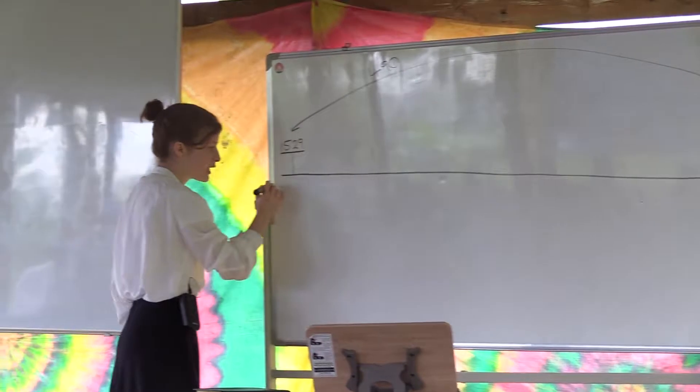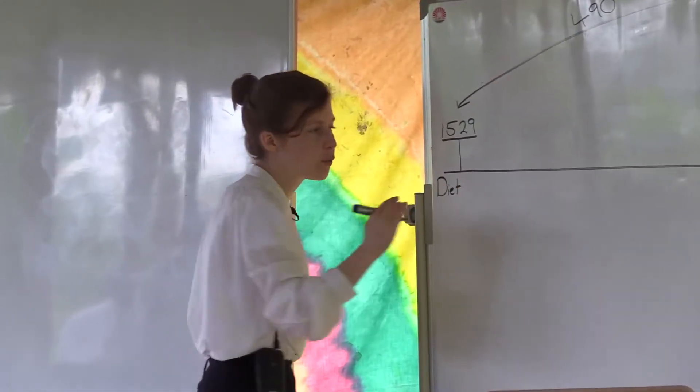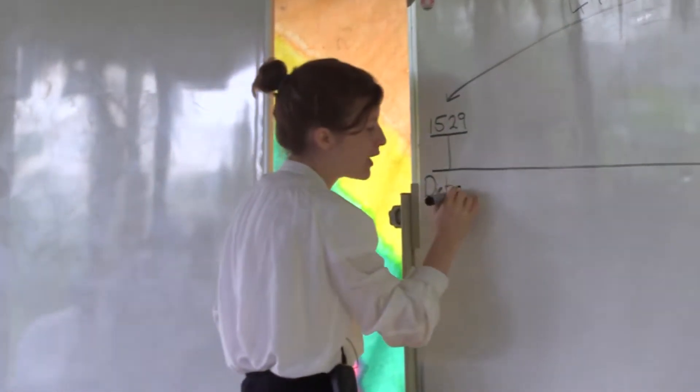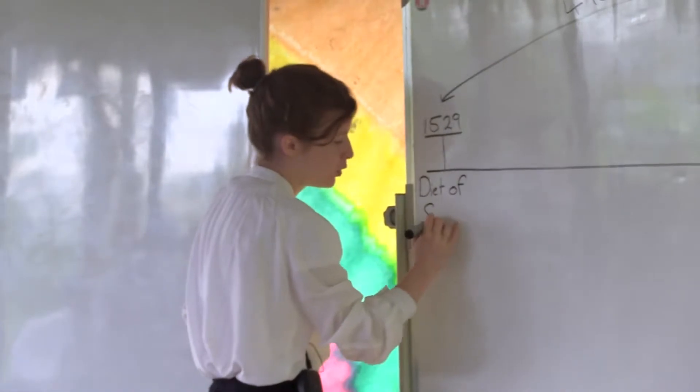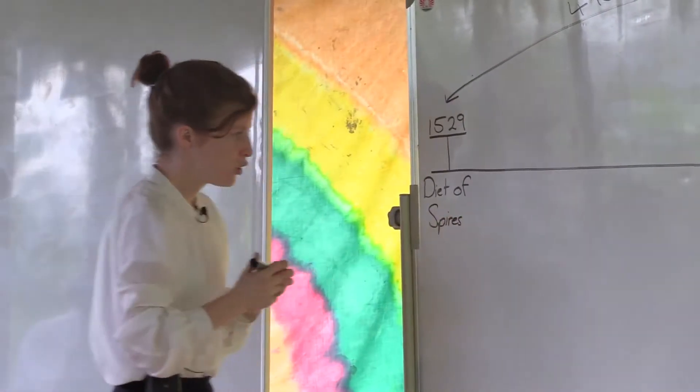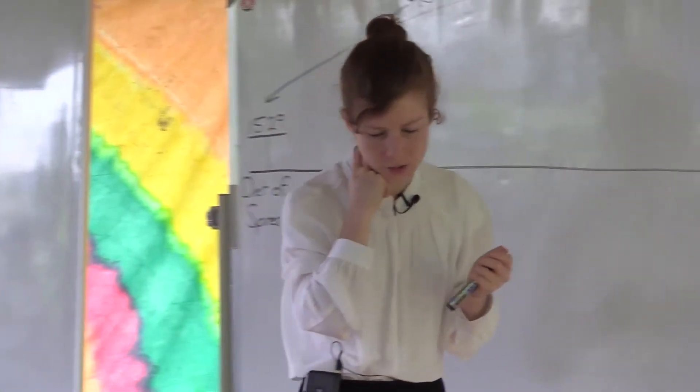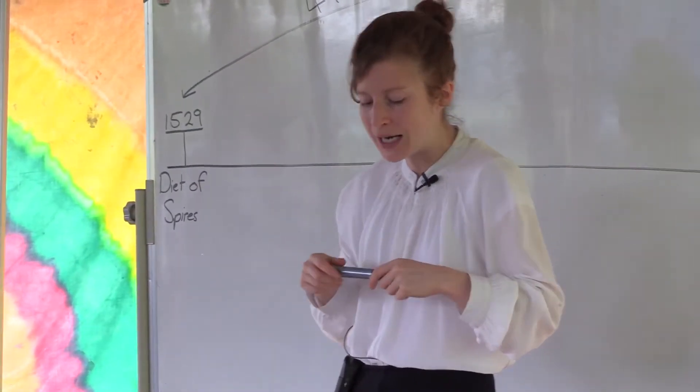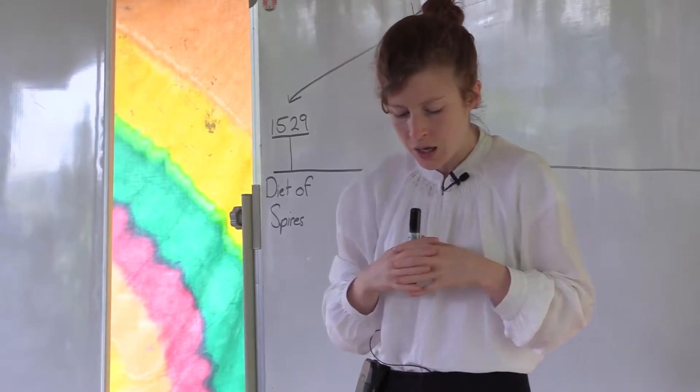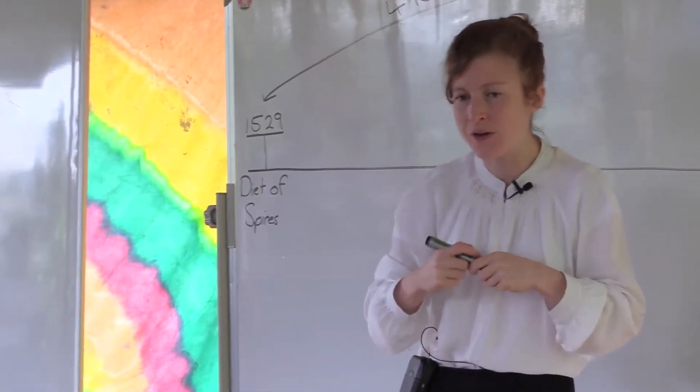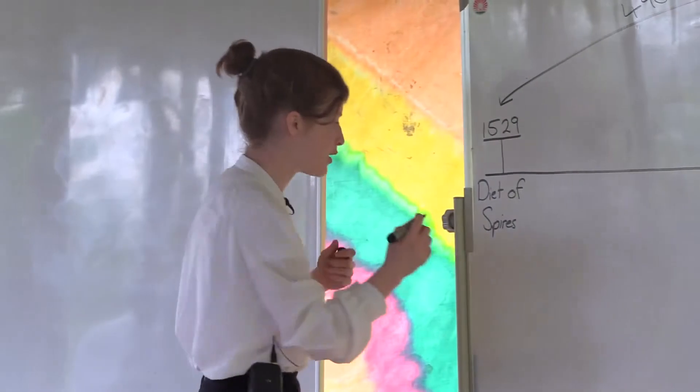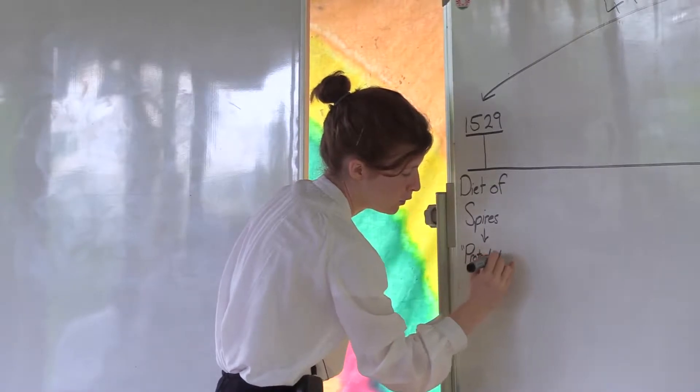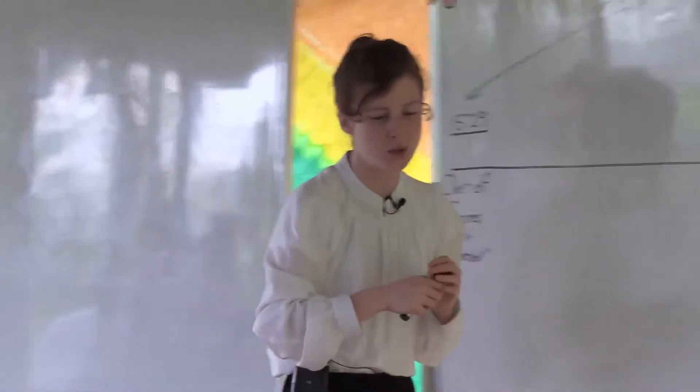This 490 takes us back to 1529. 1529 was a different diet. We understood that what took us to 2014 was the diet of worms. This is the diet of Spires, two significant waymarks during the reformation. The diet of Spires in 1529 was the protest of the princes. This protest gave the reformers the name Protestant. That name first coined in 1529.